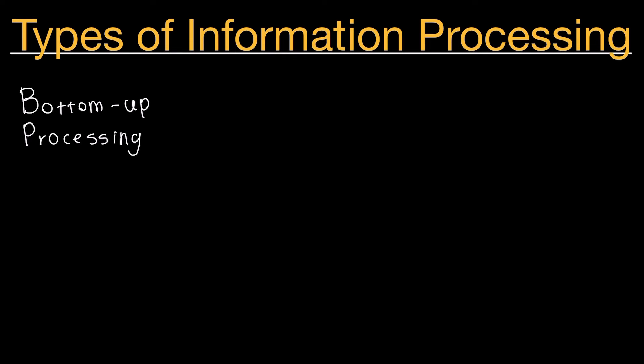In this video we're going to talk about types of information processing. Let's begin with bottom-up processing. Bottom-up processing is the analysis of the smaller features to build up a complete perception.